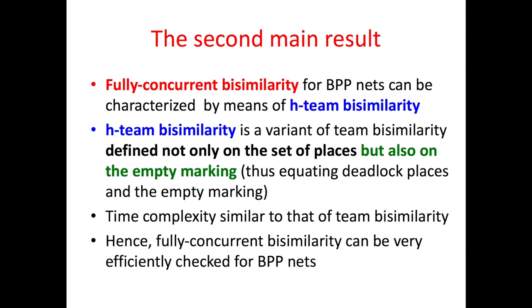The second main result is that fully concurrent bisimilarity for BPP nets can be characterized by means of H-team bisimilarity, which is a variant of team bisimilarity with a similar time complexity, defined not only on the set of places but also on the empty marking. Hence, fully concurrent bisimilarity can be very efficiently checked for BPP nets.